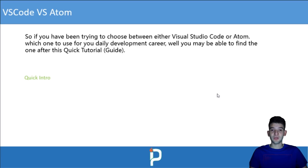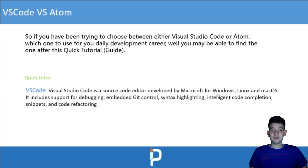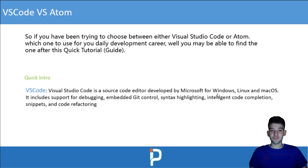Let's go through a quick introduction. Visual Studio Code, or VS Code, is a source code editor developed by Microsoft for Windows, Linux, and Mac — it's cross-platform. It includes support for debugging, embedded Git control, syntax highlighting, IntelliSense code completion, snippets, code refactoring, and much more like extensions and plugins. It's open source.